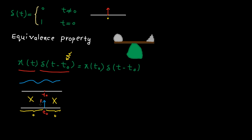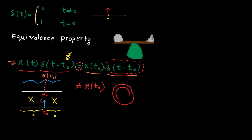So 0 multiplied by x of t gives 0 everywhere except at one point, t equal to t0. At this point, the unit impulse is 1 and the value of the other function is x at t0, so the product is x at t0. The conclusion is: this product equals the value of x at t0 multiplied by the delta function. Please note it is absolutely wrong to say the product equals just x at t0 and ignore the delta function — that would imply the function has a constant value everywhere, which is not true. The only non-zero point is at t equal to t0, and that's why the delta function must be present.